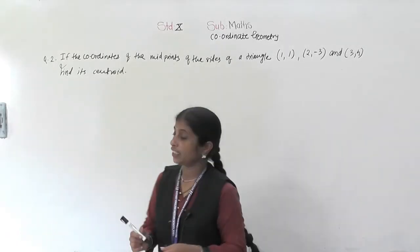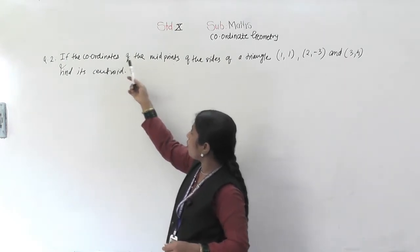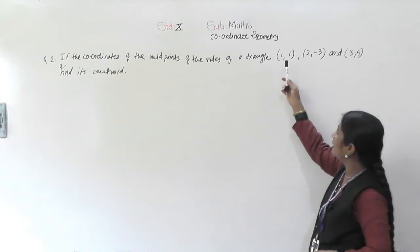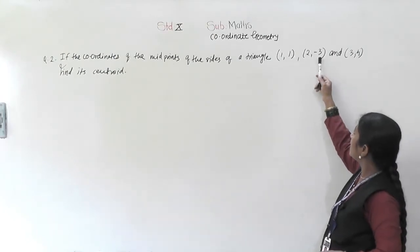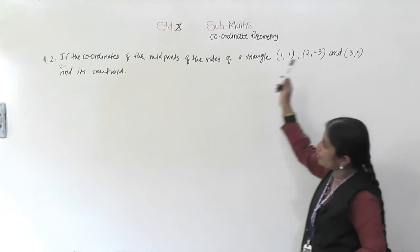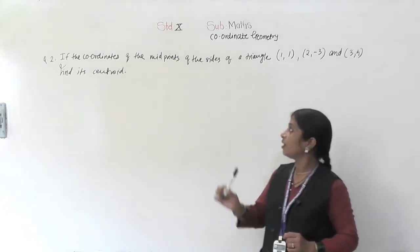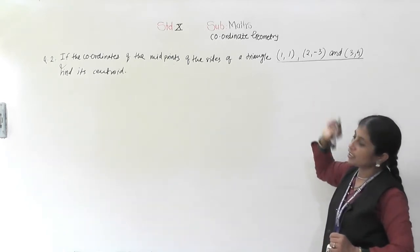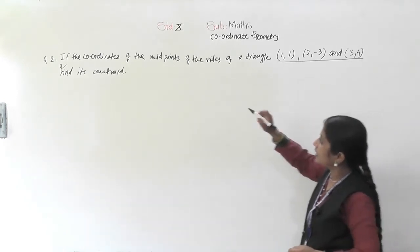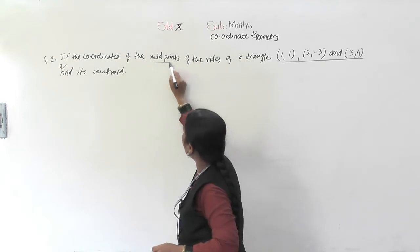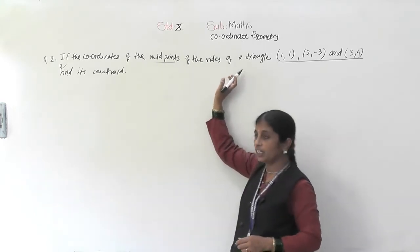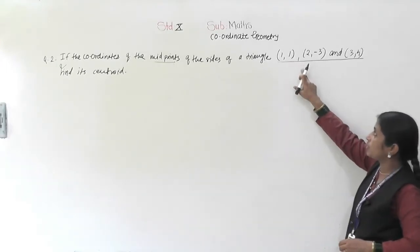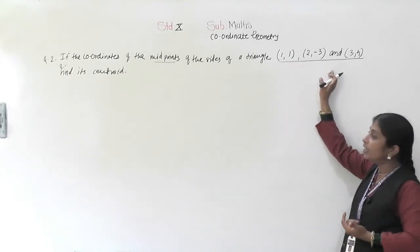Now we will see the next example. If the coordinates of the midpoints of the sides of a triangle are (1, 1), (2, -3), and (3, 4), find its centroid. These are the coordinates of the midpoints of the sides of a triangle.